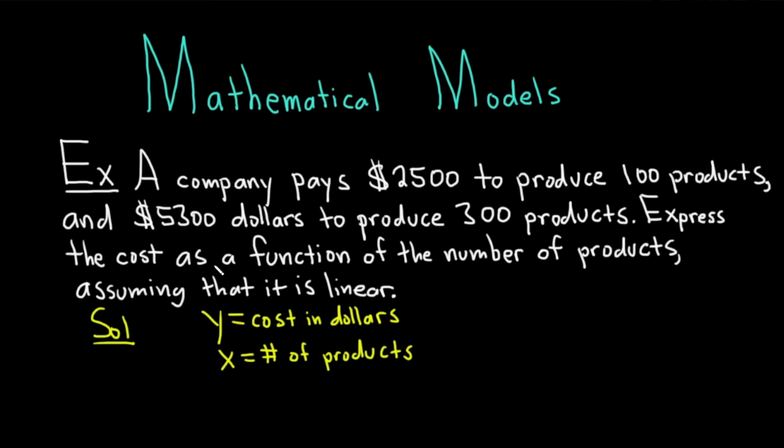And the question wants the cost as a function of the number of products. So that means we're going to have y as a function of x. Okay, now we need to use the other information that's given in the problem. To make things easier, it might help to make a little table like this. So this is x and this is y.